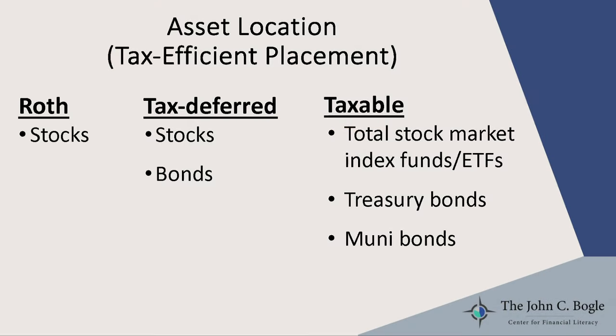The tax-deferred account usually owns a mix of stocks and bonds, because our rules are: highest returning assets in Roth, and tax efficient stuff in taxable — there are no special rules about tax-deferred, so anything is a fine fit there. The job of the tax-deferred account is basically to own whatever else we need to reach our overall target asset allocation. Because the Roth is filled with stocks, we put bonds in the tax-deferred account, and if there's more space, more stocks too. In the taxable account, we stick with tax efficient things: low-turnover funds like total stock market funds, treasury bonds for their lower interest rate and state tax exemption, and muni bonds for their federal and potentially state income tax exemption.